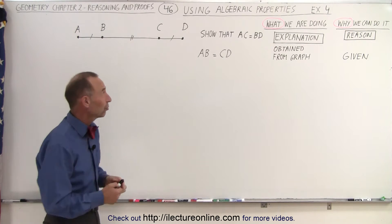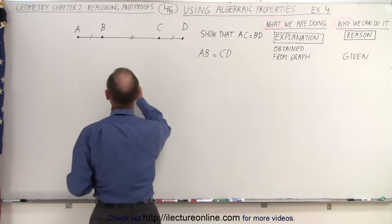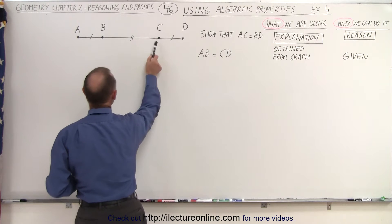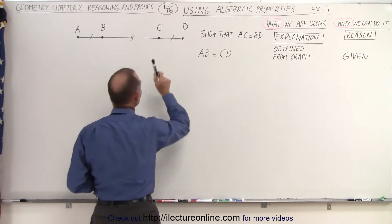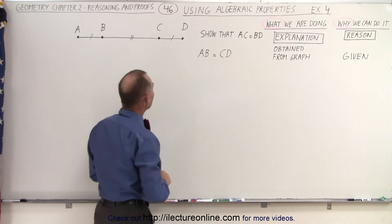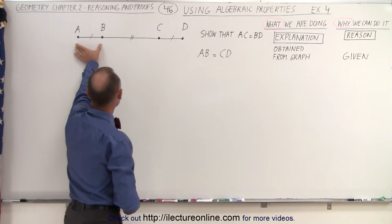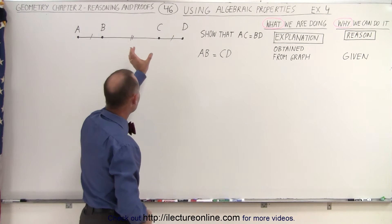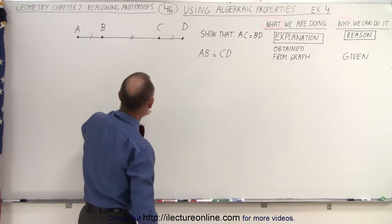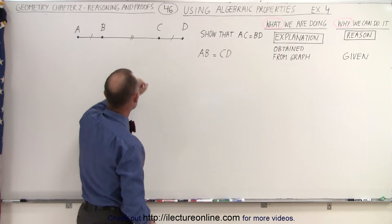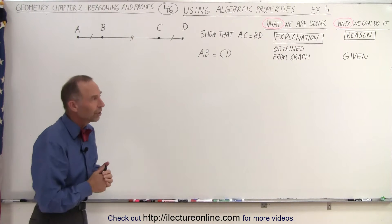They're asking us to show that the distance from A to C is equal to the distance from B to D. They tell us that the section from A to B is equal in length to the section from C to D, and it's different in length than the section from B to C.